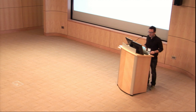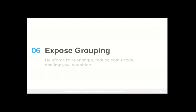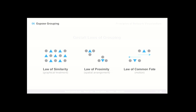The sixth key principle is to expose grouping — we need to be more concerned about exposing grouping, reinforcing relationships, reducing complexity, and improving cognition. The three main Gestalt laws of grouping are useful here. The law of similarity says elements that are graphically similar appear to be more related than others. The law of proximity says elements that are closer together appear to be more related. The law of common fate, extremely useful for motion and interaction pieces, says elements moving in similar directions appear to be more related. A lot of the Gestalt body of knowledge can be immensely useful for tracking and mapping commonalities across networks.